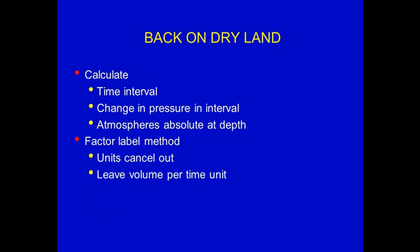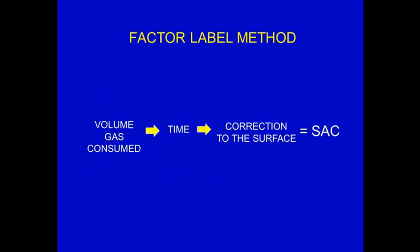Back on dry land, it is necessary to calculate the total time interval in minutes, the change in pressure in the interval, and the atmospheres absolute at depth. We are now going to use the factor label method. The factor label method is easy to understand. When the equation for the surface air consumption is calculated, the unit labels will be cancelled out, and what this leaves is the volume per time unit. With the factor label method, we have the volume of gas consumed, used over a period of time, and then this is corrected to the surface, yielding the surface air consumption rate.